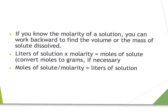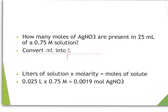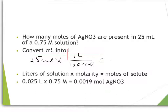If you know the molarity of a solution, you can work backwards to find the volume or the mass of the solution that was dissolved. In this problem, we are asked to find how many moles of silver nitrate are present in 25 milliliters of a 0.75 molar solution. We convert 25 milliliters to liters: 25 milliliters times 1 liter over 1,000 milliliters gives us 0.025 liters. We multiply this by our molarity — remember, molarity is moles over liters — liters cancel out, and we get 0.0019 moles of silver nitrate.